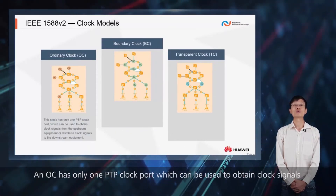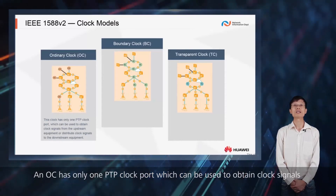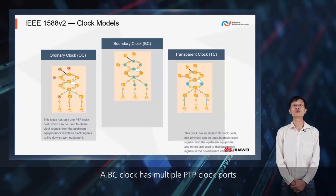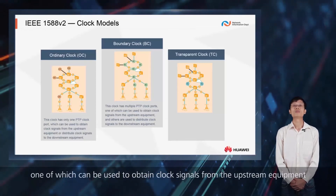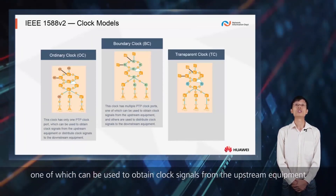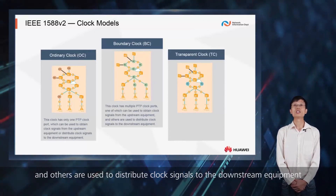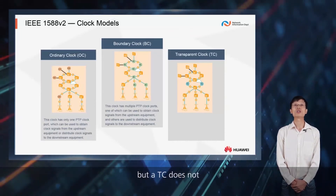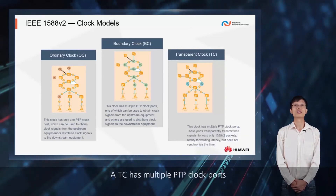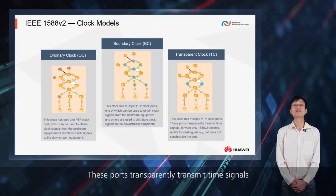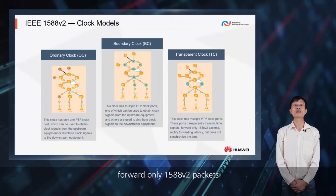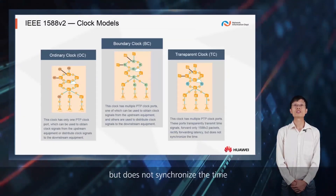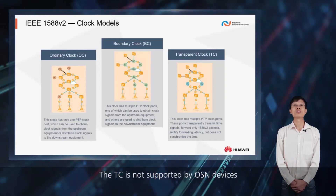An OC has only one PTP clock port, which can be used to obtain clock signals from the upstream equipment or distribute clock signals to the downstream equipment. A BC clock has multiple PTP clock ports, one of which can be used to obtain clock signals from upstream equipment, and others are used to distribute clock signals to downstream equipment. A BC and an OC need to be synchronized with other clocks, but a TC does not. A TC has multiple PTP clock ports that transparently transmit time signals, forward only 1588 version 2 packets, and rectify forwarding latency, but do not synchronize the time. The TC is not supported by OSN devices.